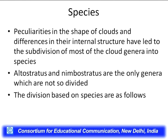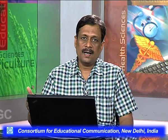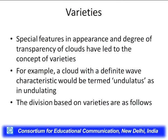Those ten genera, each with a specific height, can be combined with any of the species — which are based on appearance, texture, color, width, etc. — giving rise to many different kinds of clouds. The third basis of classification is variety, which is essentially an addendum. If there is some special feature in a cloud's appearance or degree of transparency, a variety name can be added.